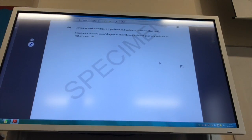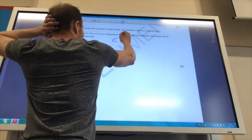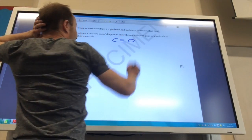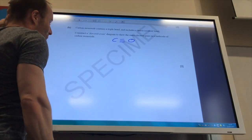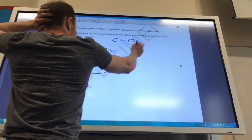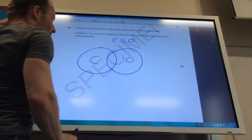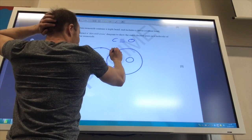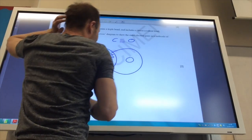Right, so this one, you may freak out a little bit, but don't. It's actually quite straightforward from the information they've given you. Carbon monoxide contains a triple bond and includes a dative covalent bond. Construct a dot and cross diagram to show the outer electron configuration. So let's go for it. I've got carbon bonded with oxygen, and I know it's a triple bond. So I've got a normal double bond, and then I've got a dative covalent bond.